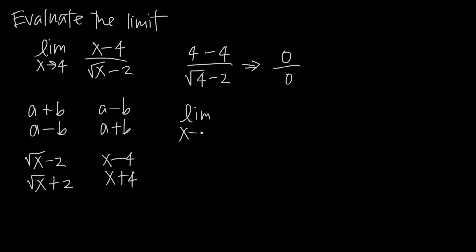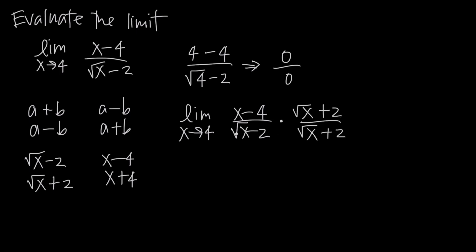So we write the limit as x approaches 4, leaving the numerator and denominator — x minus 4 over the square root of x minus 2 — exactly as they are, and then multiply by the conjugate of the denominator: the square root of x plus 2 divided by the square root of x plus 2. Notice that because the numerator and denominator of this second fraction are the same, it reduces to 1, just like 7 divided by 7 equals 1. So we're multiplying by 1 and not changing the value of the original function.